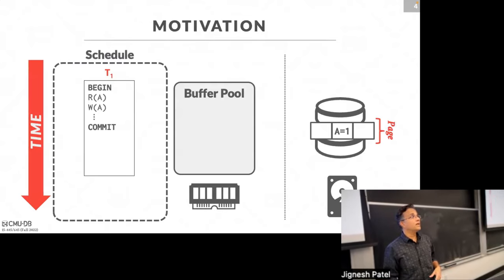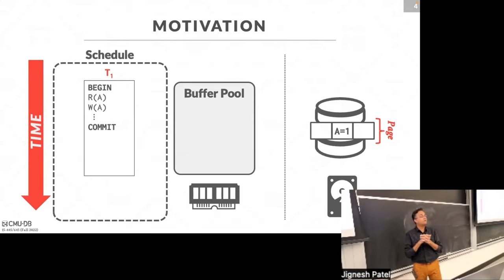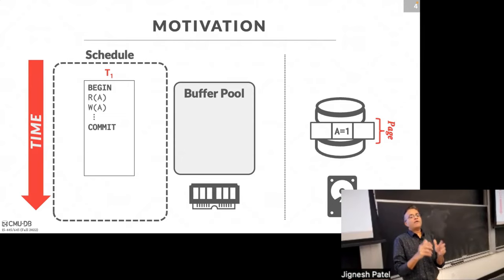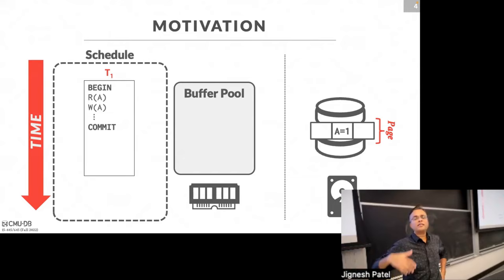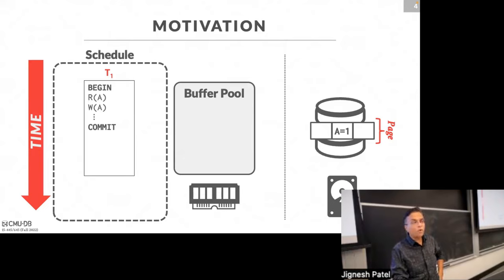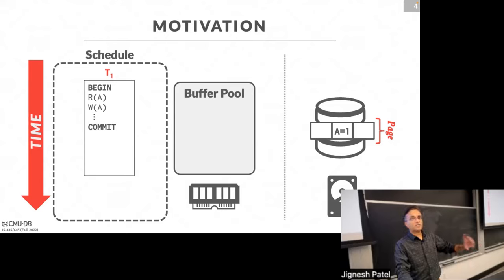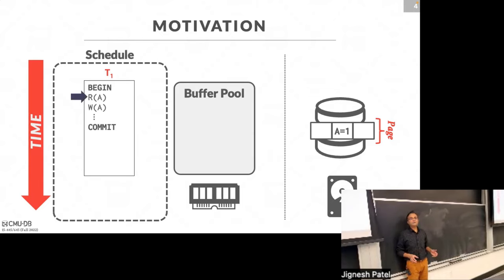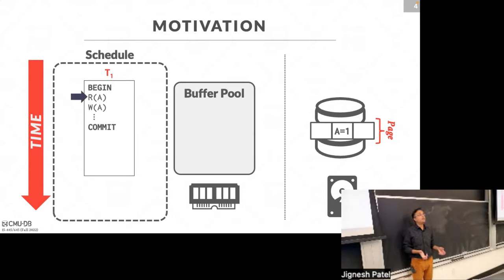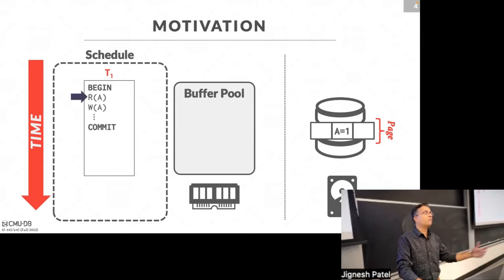Now getting into recovery protocols - the last missing piece to complete ACID. We want transactions to be all-or-nothing (atomicity) and durable: if a transaction is declared committed, even after a crash the changes are recorded. We'll start with motivation: a simple transaction reads and writes, and the buffer pool is now explicit in our diagrams because it's the source of many complications.